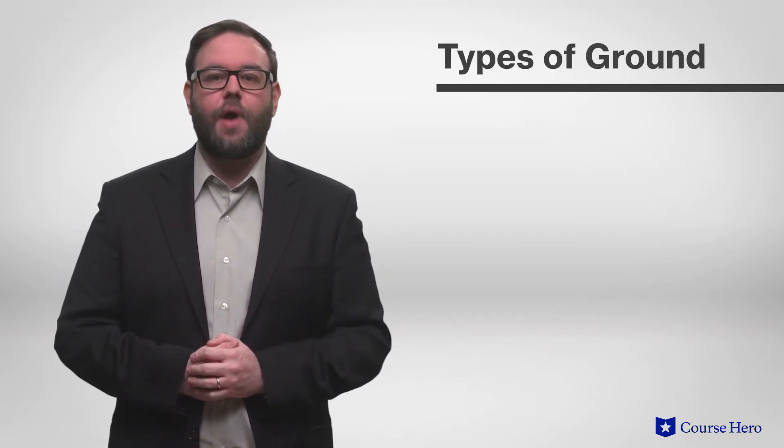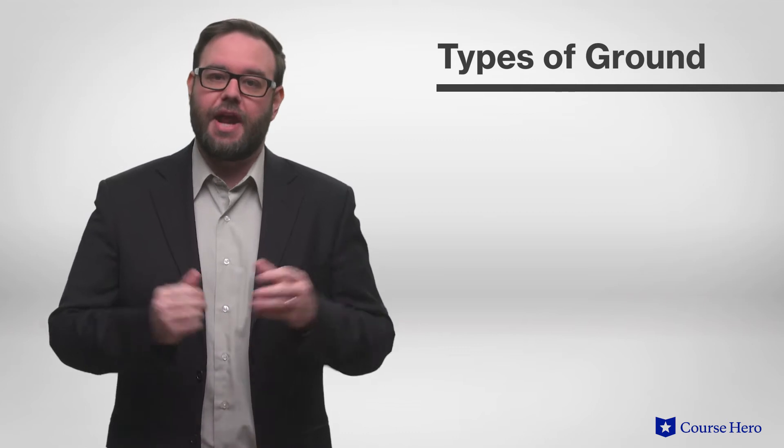Chapter 8 of The Art of War is called The Nine Variables. Sun Tzu identifies what should and should not be done in five different types of ground to lay a foundation for the nine variables.